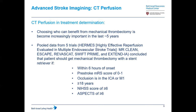Choosing who can benefit from mechanical thrombectomy has become really important in the last five years. Pooled data from five trials — HERMES, which included MR CLEAN, ESCAPE, SWIFT PRIME, and EXTEND — concluded that a patient should get mechanical thrombectomy with a stent retriever if they present within six hours of onset, had a pre-stroke modified Rankin scale of zero to one, have a large vessel occlusion in the anterior circulation (ICA, M1), are greater than 18 years of age, have an NIH stroke scale greater than 6, and importantly an ASPECTS score greater than 6.